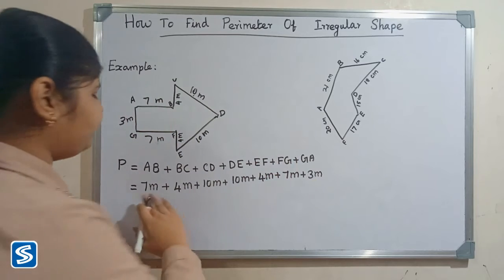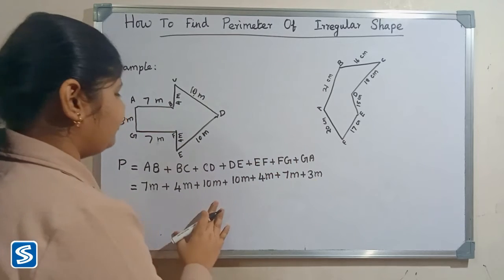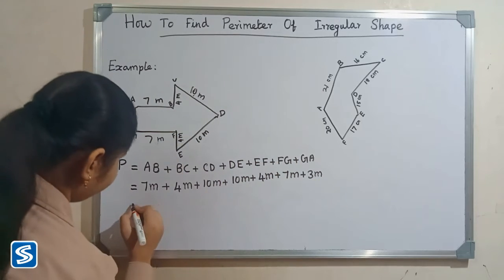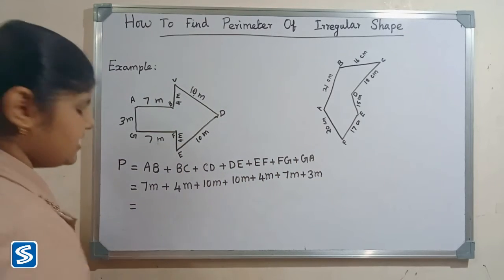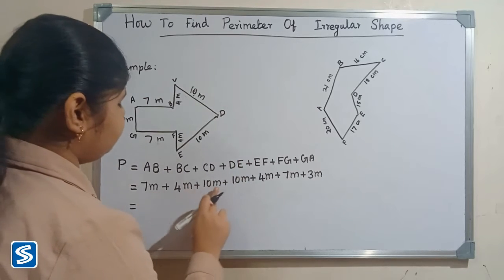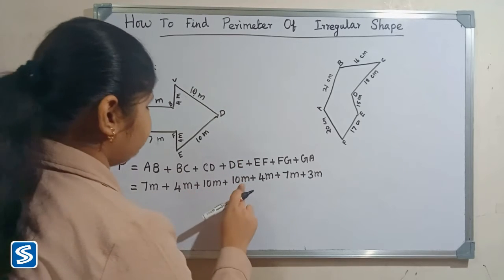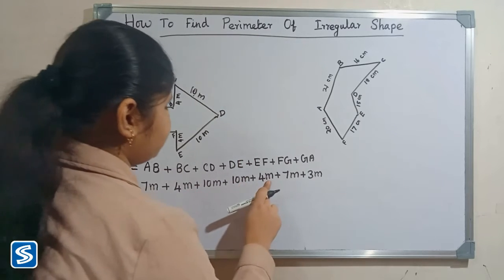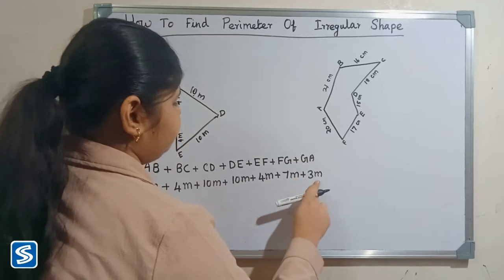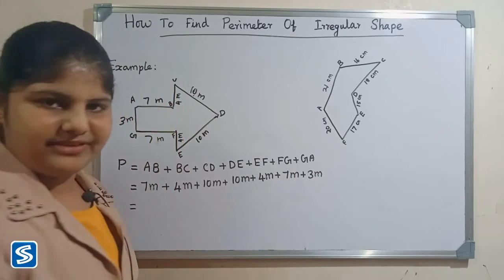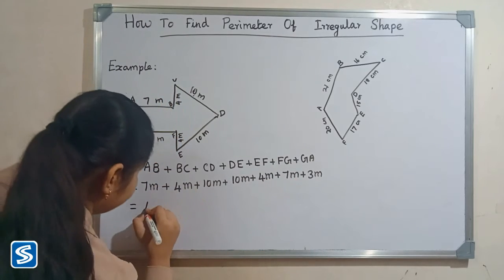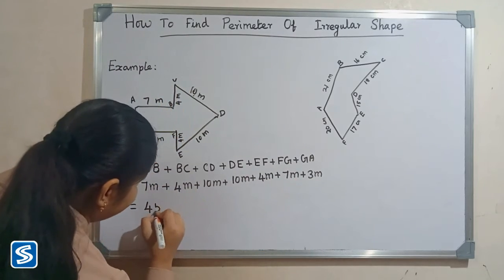Now we have to add the length of all sides. So 7 meters plus 4 meters plus 10 meters plus 10 meters plus 4 meters plus 7 meters plus 3 meters equals 45 meters.